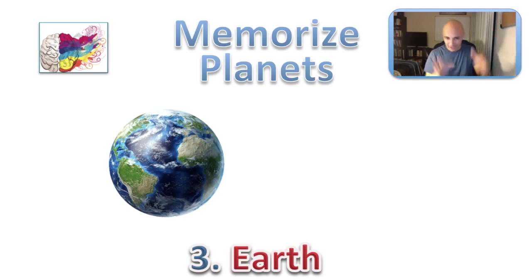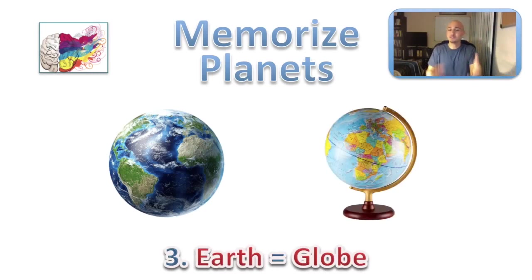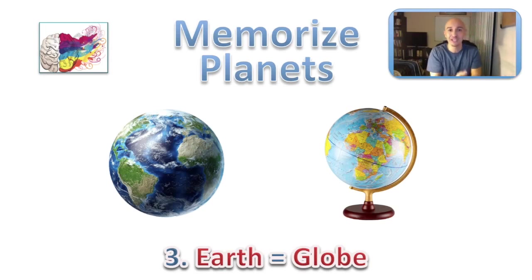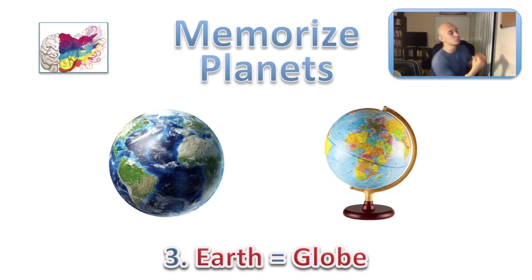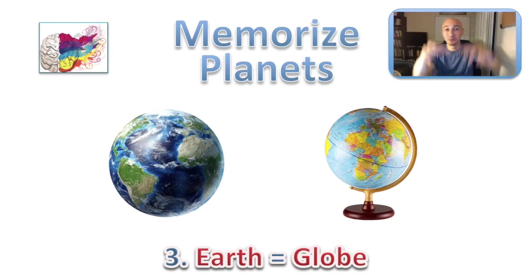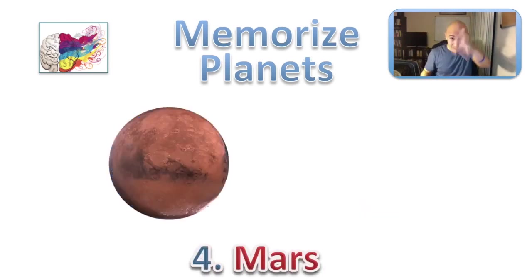Third is Earth — mother Earth, right here, this rock floating in space going around the Sun. For Earth, just picture a globe and attach it to your third location. For me, that's a sofa, so maybe I picture a big globe with arms and legs just chilling there, rolling around my couch and flattening it because it's so big and heavy. Picture the globe very vividly on your third location.